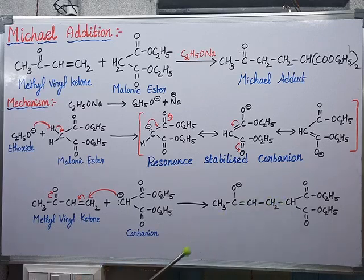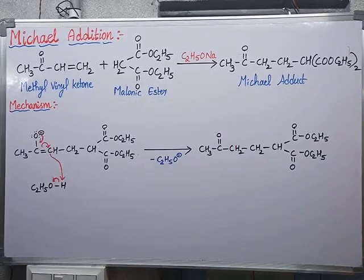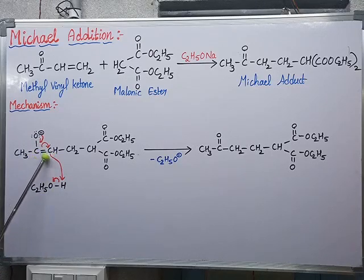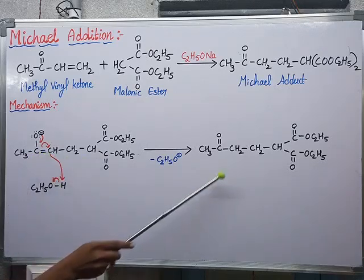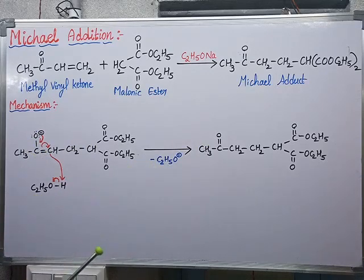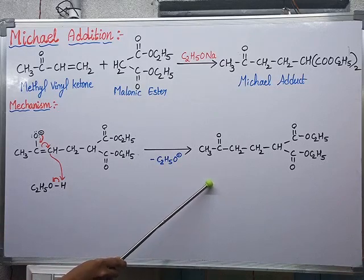We now have an intermediate formed by combining the two main reactants. This intermediate reacts with ethanol, which provides H⁺ ions. Shifting the double bond toward the carbon gives it a negative charge; this negatively charged carbon attracts the H⁺, forming CH₂. The ethoxide ion (C₂H₅O⁻) is released as a byproduct. Finally, we obtain the Michael adduct, which is the combined product of the two reactants.